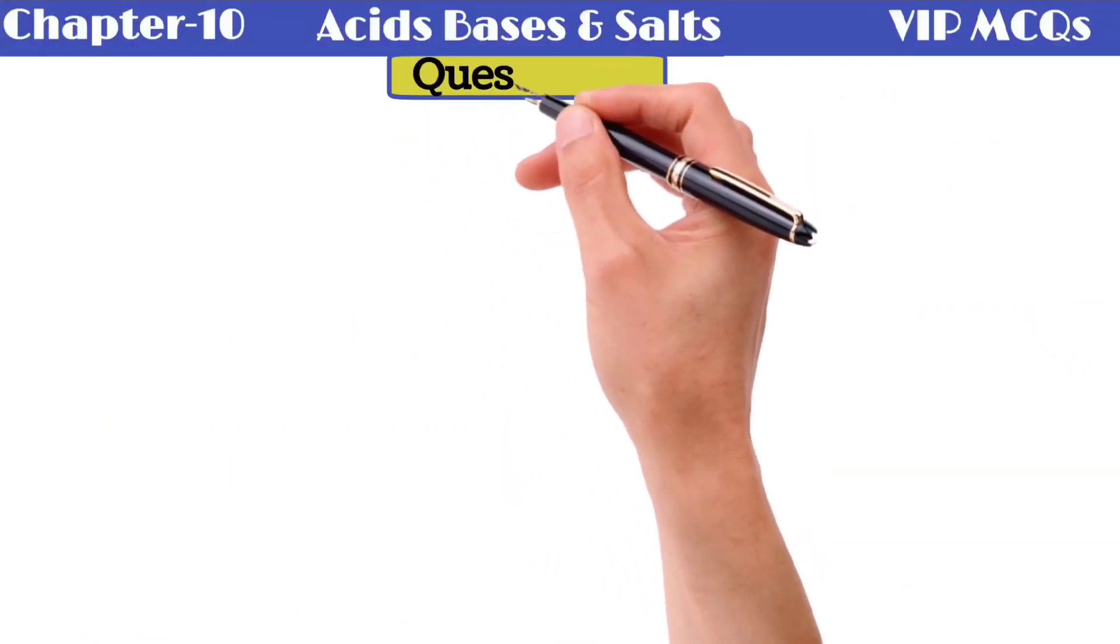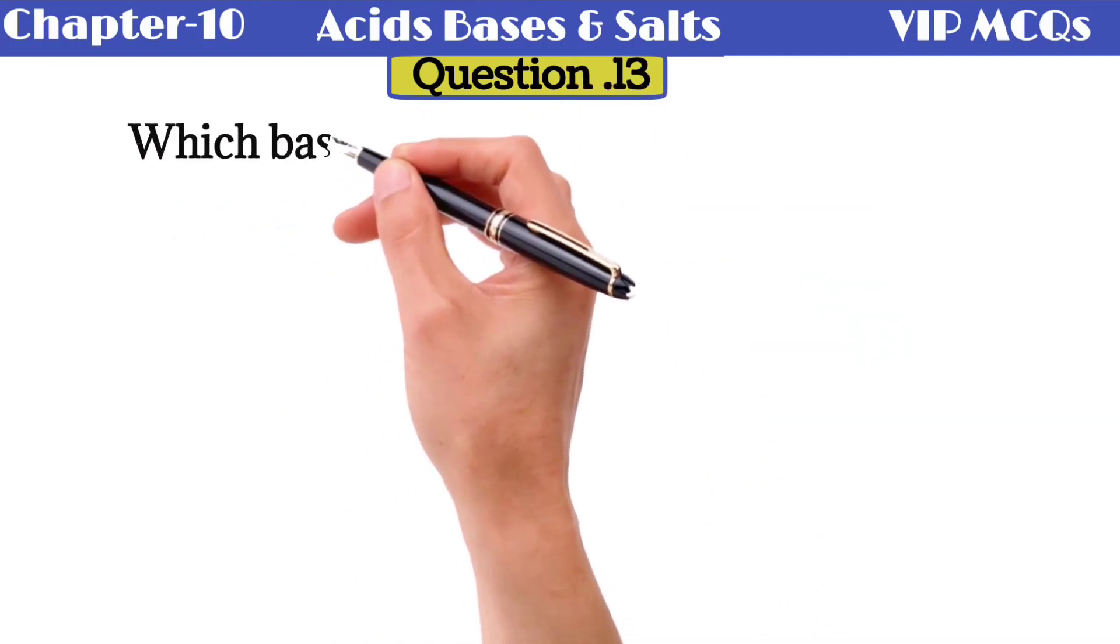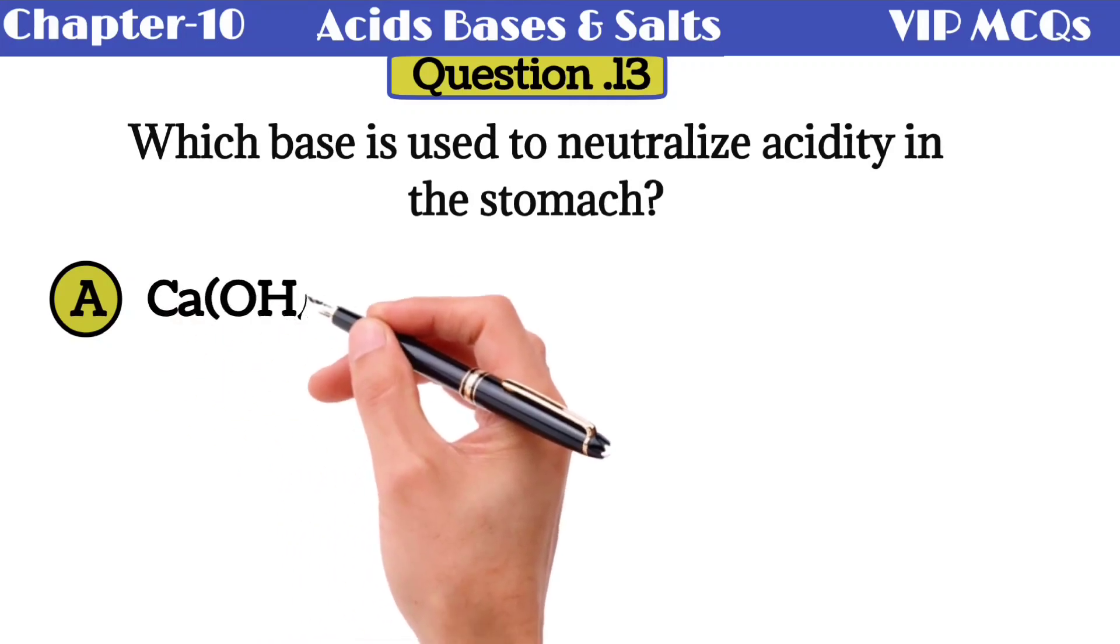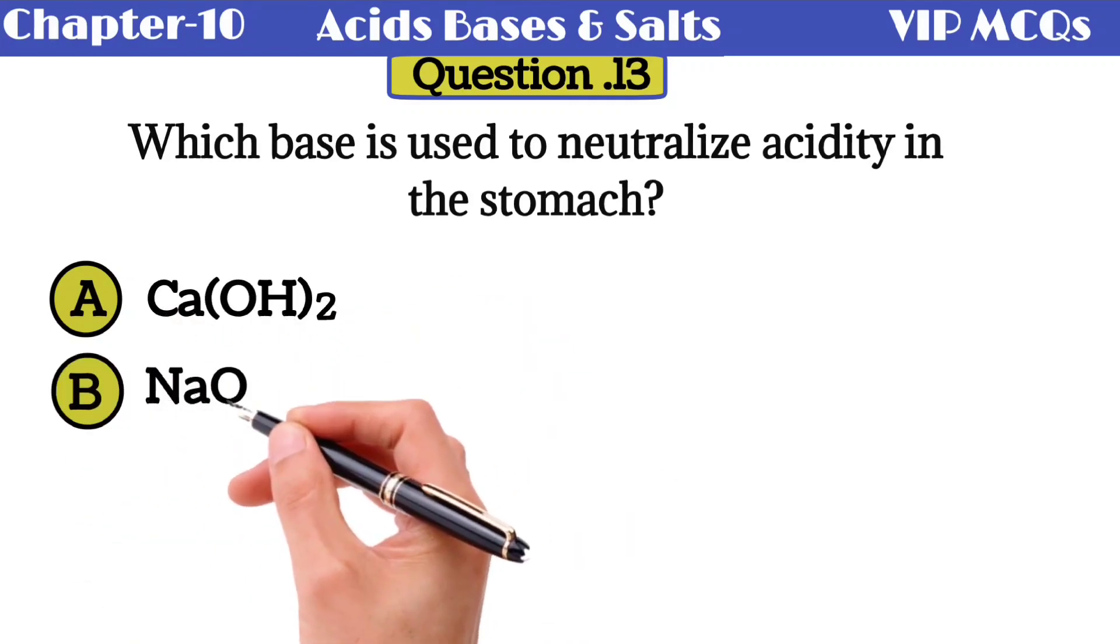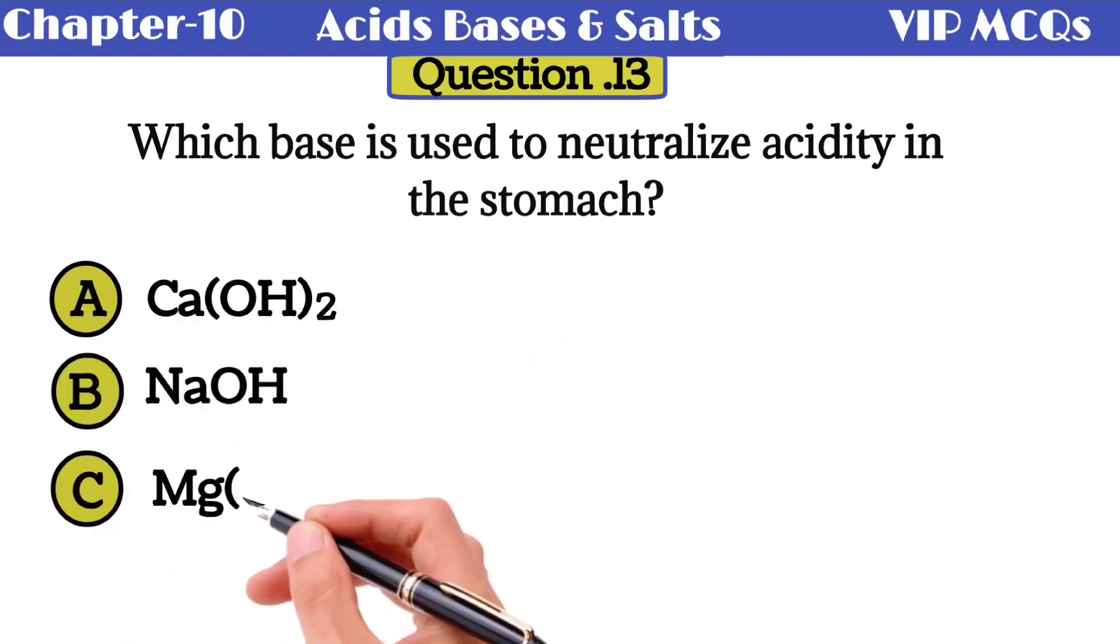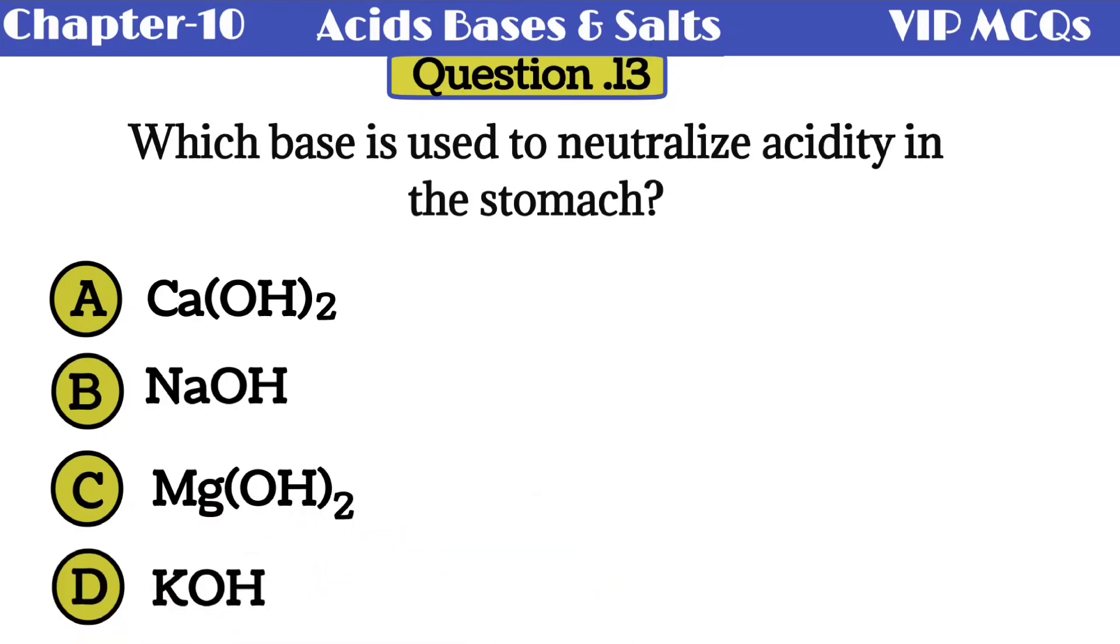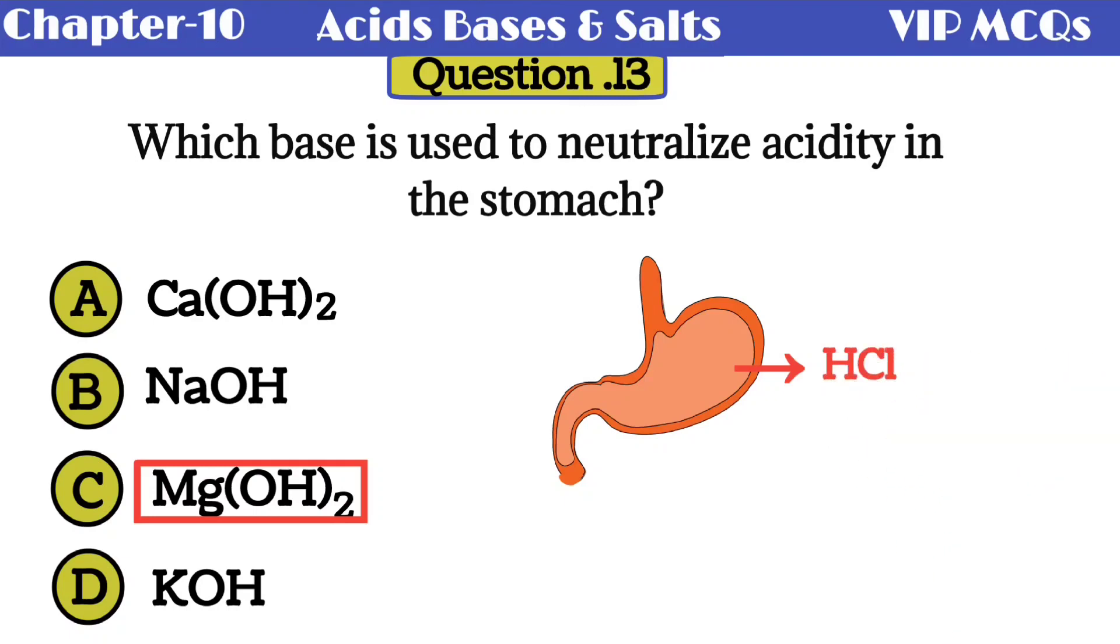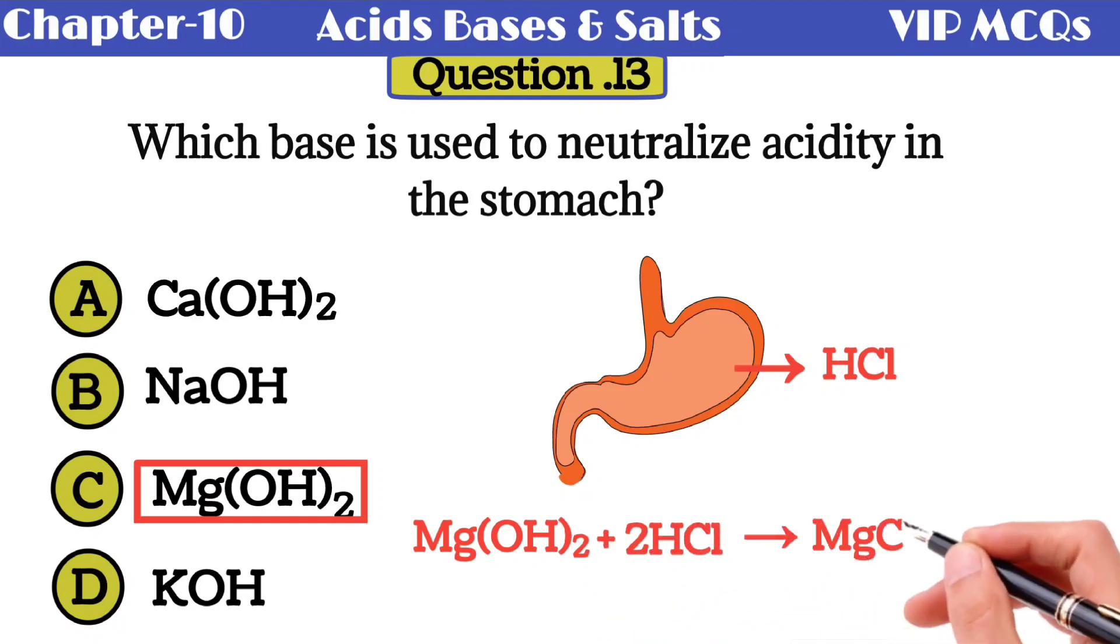Question number 13: which base is used to neutralize acidity in the stomach? Option A calcium hydroxide, option B sodium hydroxide, option C magnesium hydroxide, option D potassium hydroxide. The correct option is magnesium hydroxide. Our stomach produces HCl. The excess of HCl produced by stomach causes acidity. That acidity is cured by magnesium hydroxide. When magnesium hydroxide reacts with HCl, it is converted into salt and water.